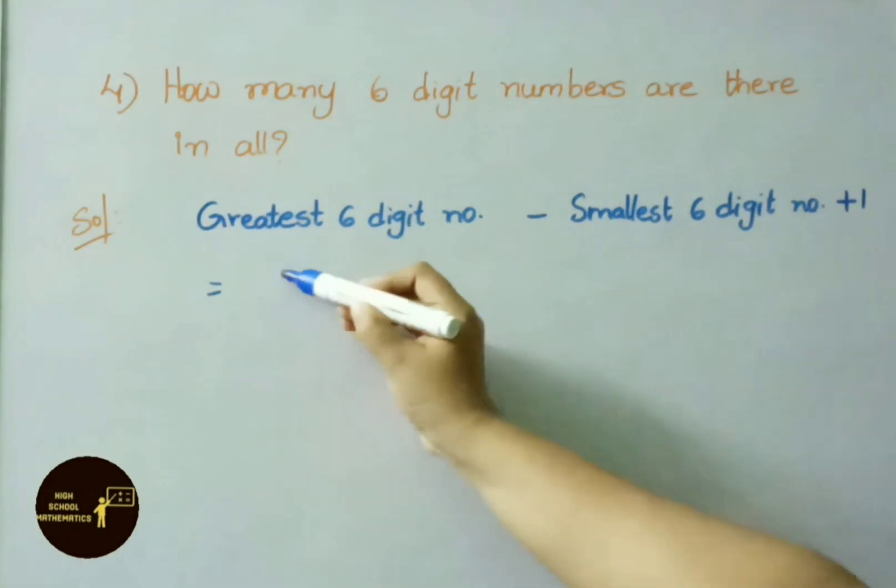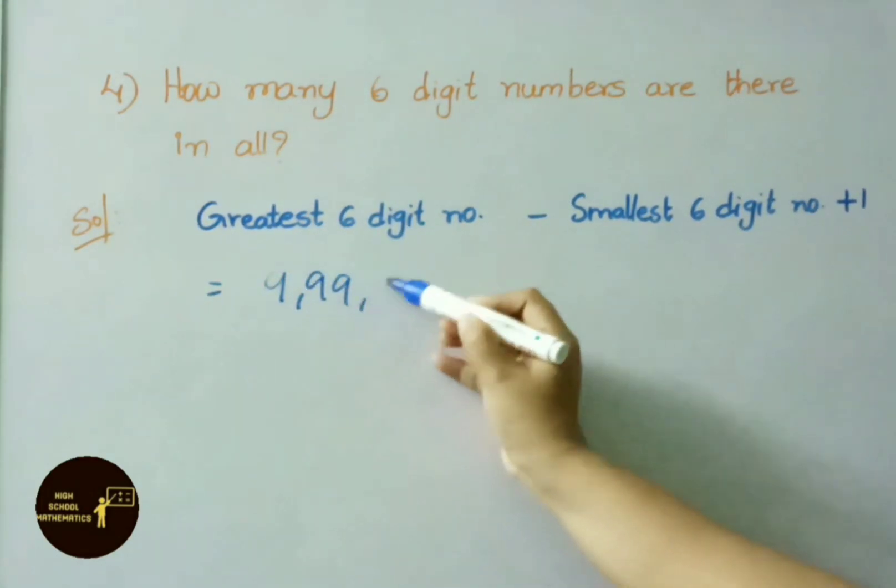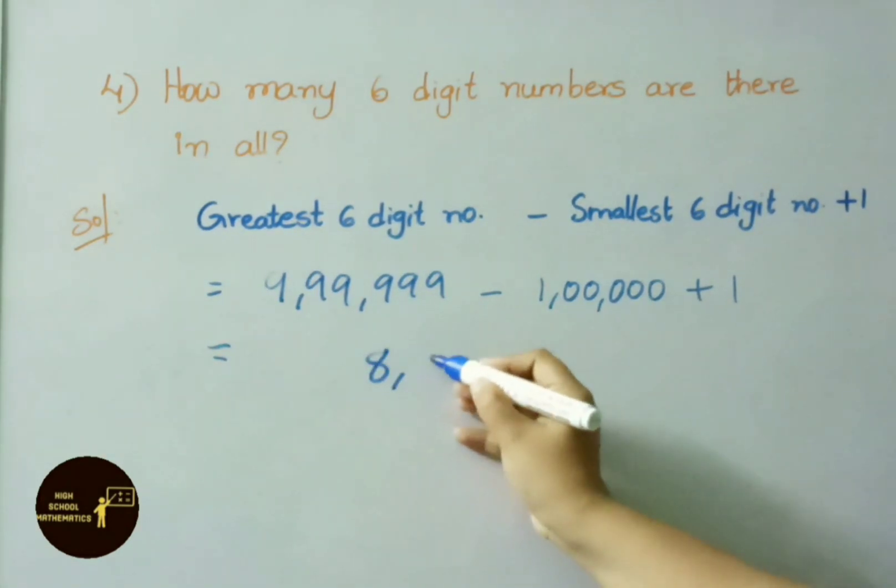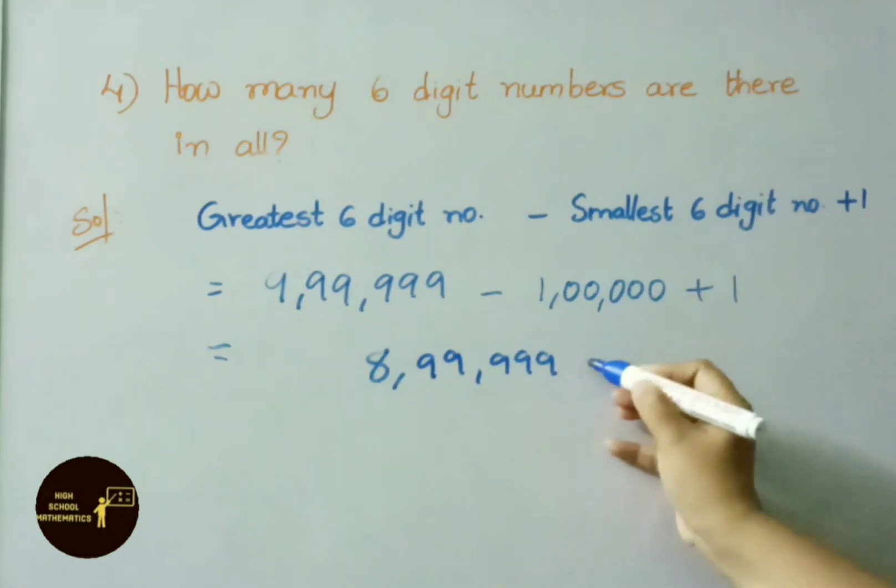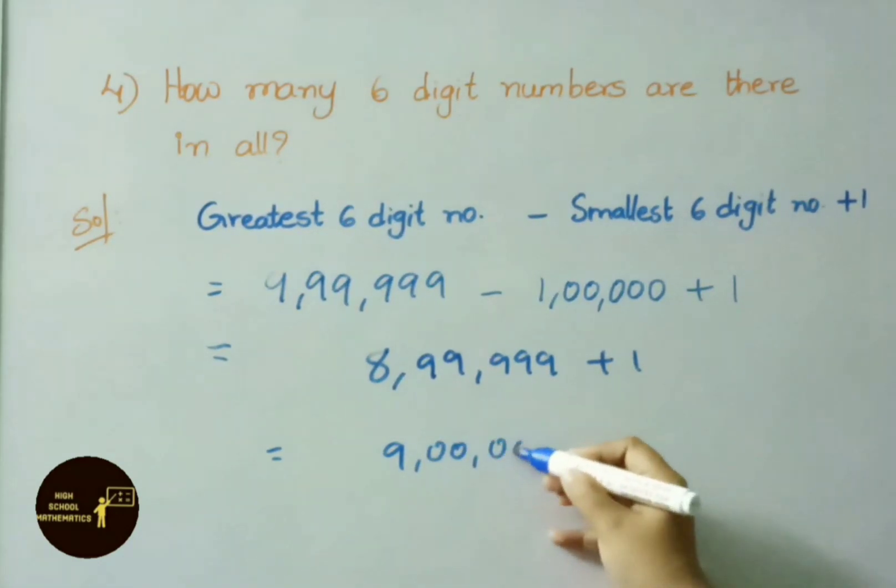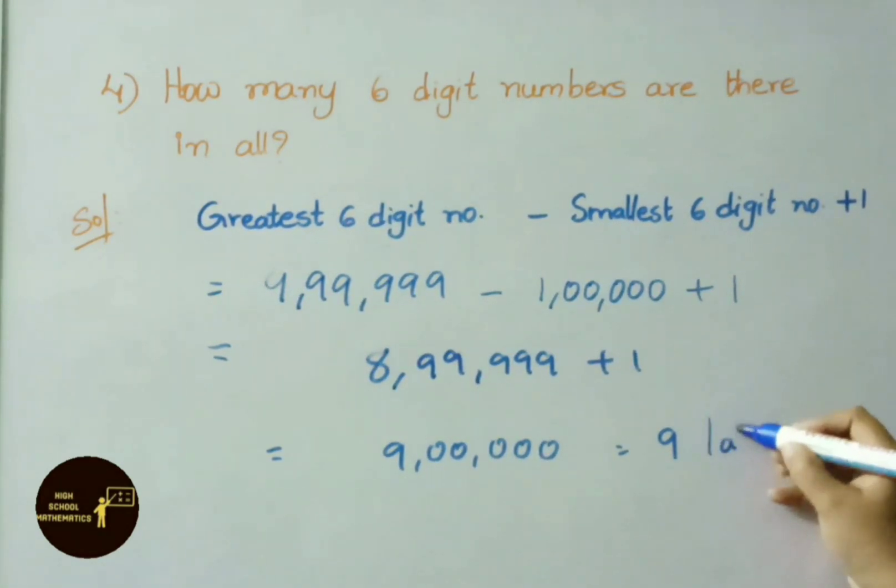Greatest 6 digit number means 9,99,999. Minus smallest 6 digit number is 1,00,000. Write down the number 1,00,000 plus 1. If we subtract 1,00,000 from 9,99,999 we get 8,99,999. Add this one we get answer 9,00,000. Therefore 9,00,000 six digit numbers are there in all.